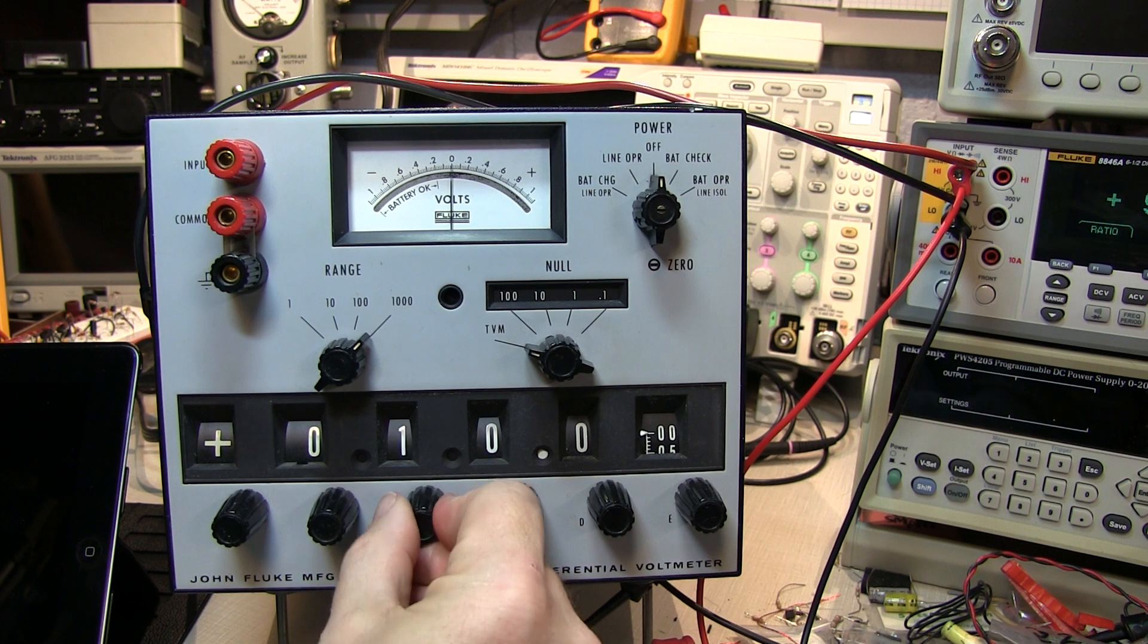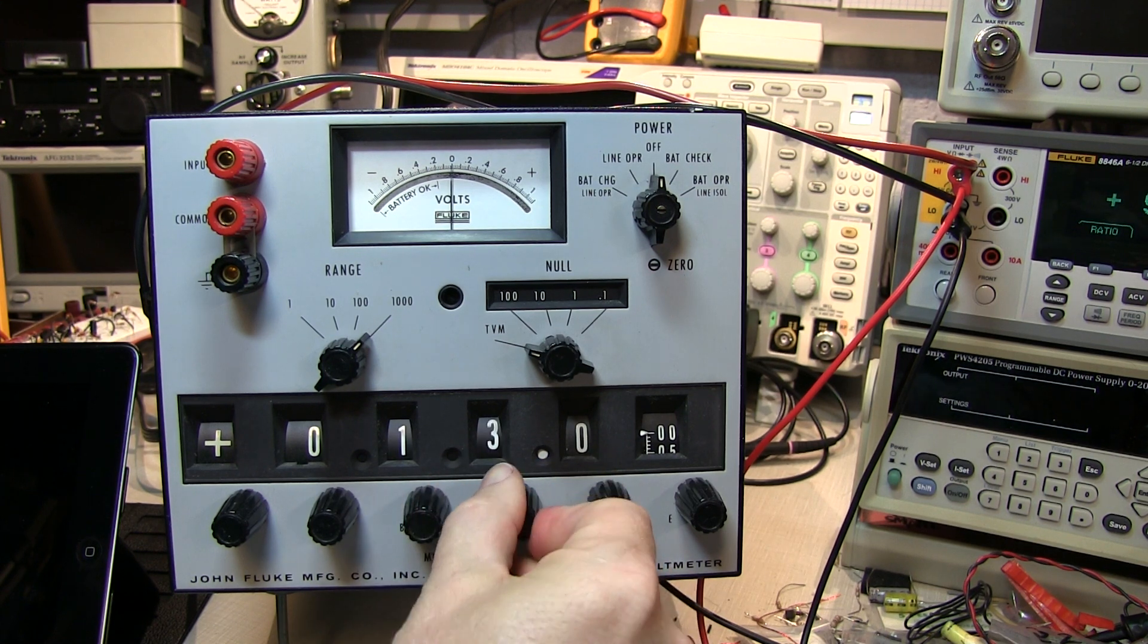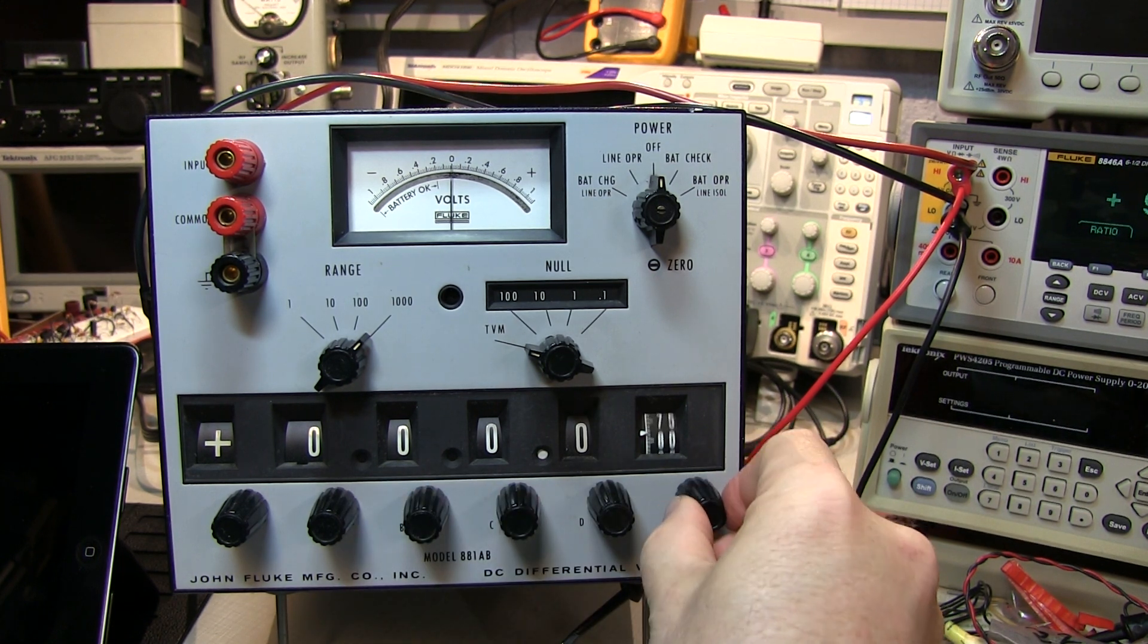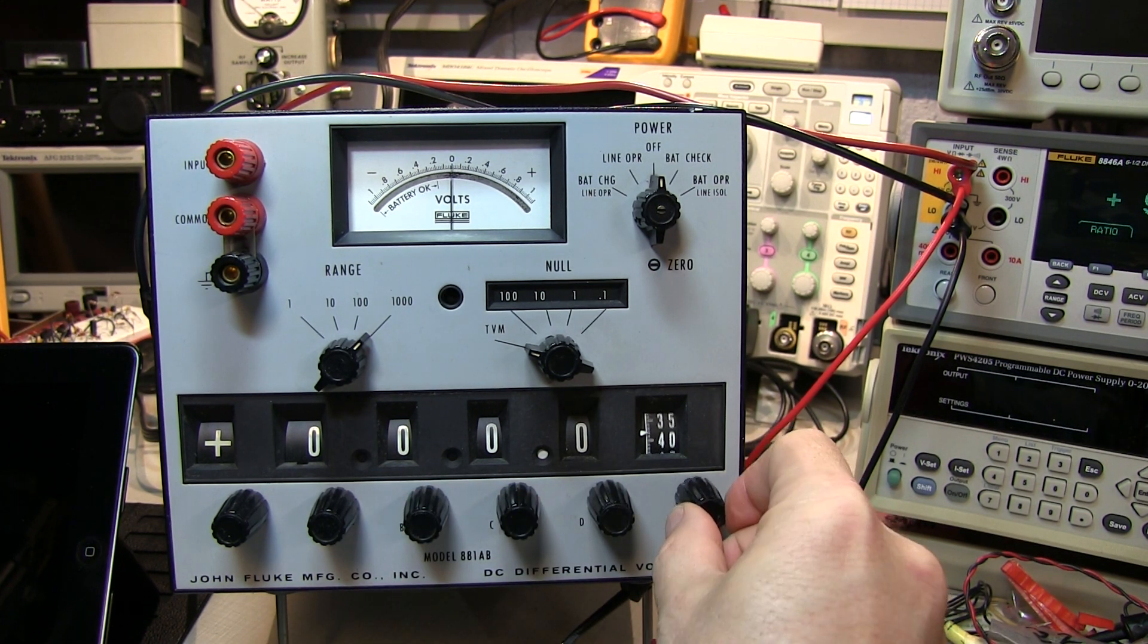Rotating the switches in the Kelvin-Varley divider will also change the mechanical indicators for the numbers, and there's a vernier down here which you can read for the fine scale.